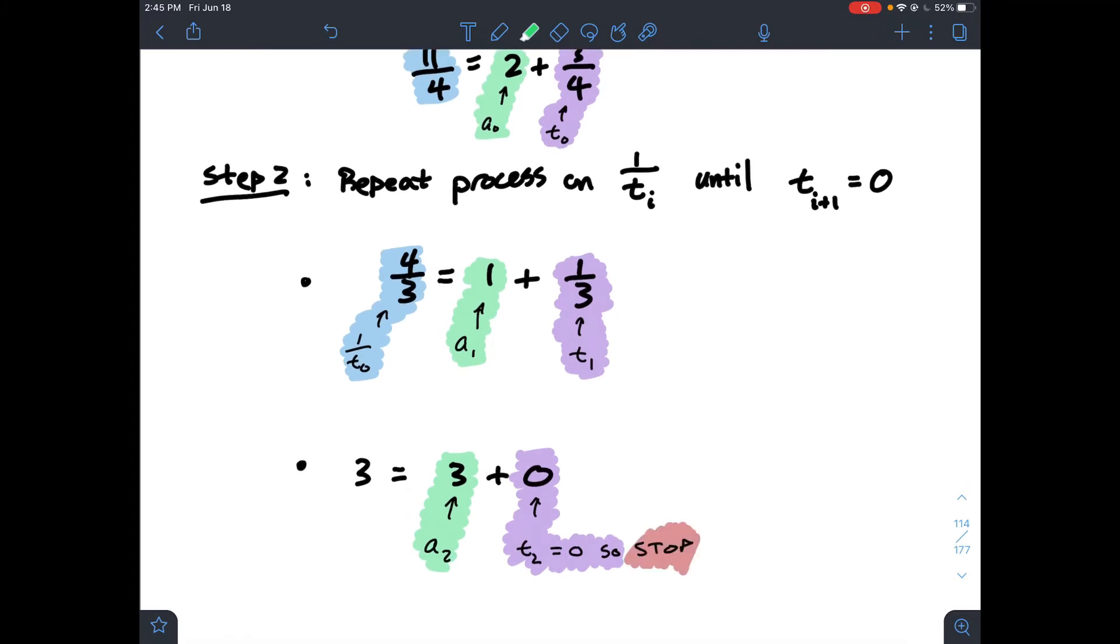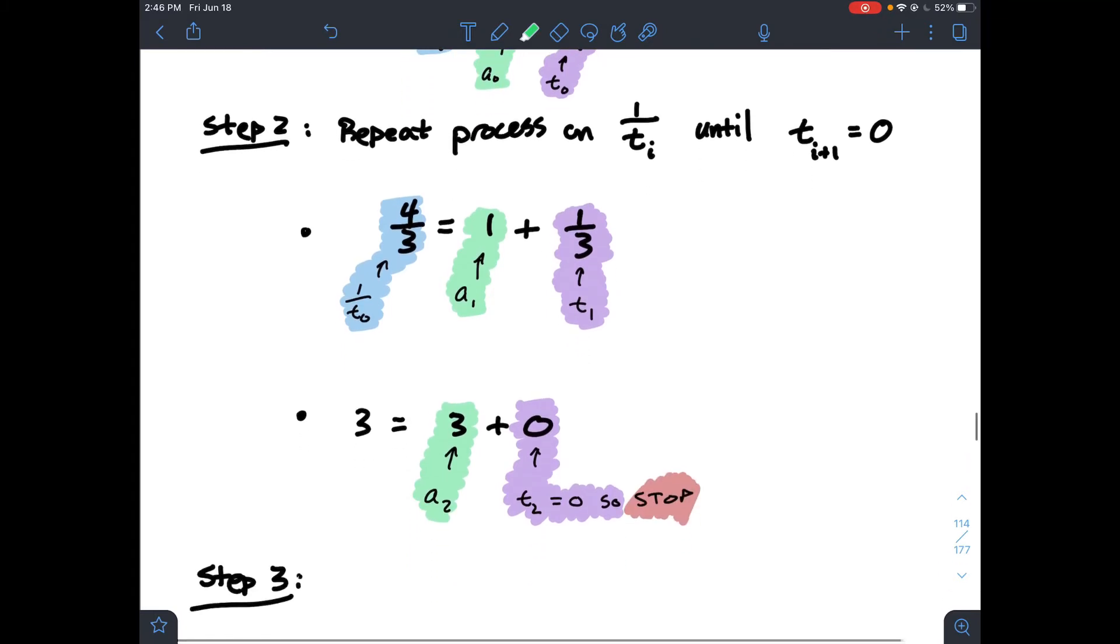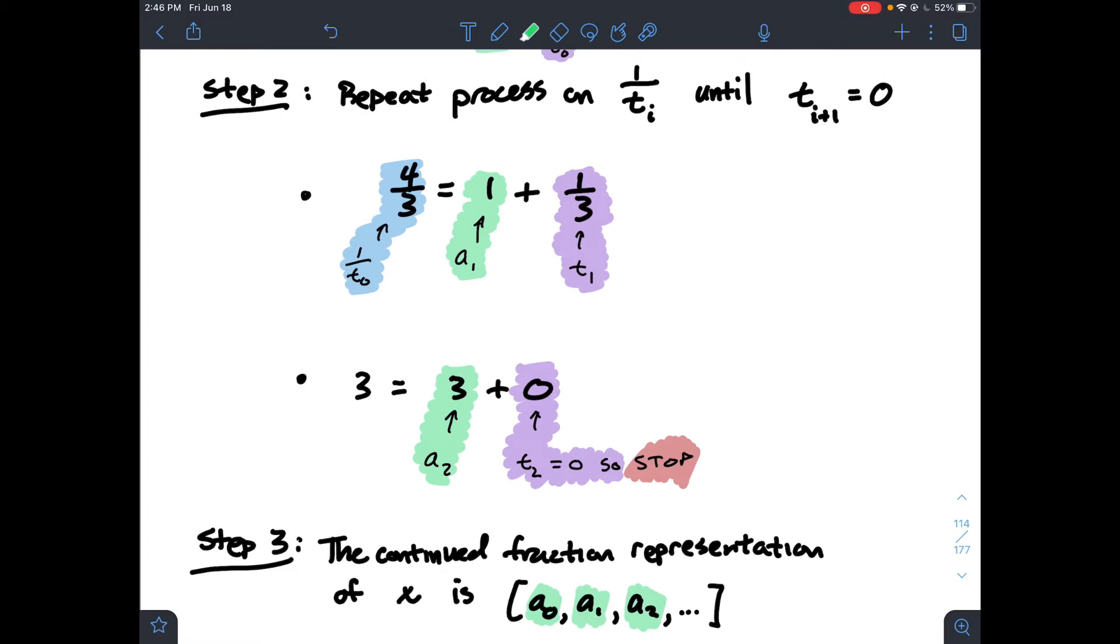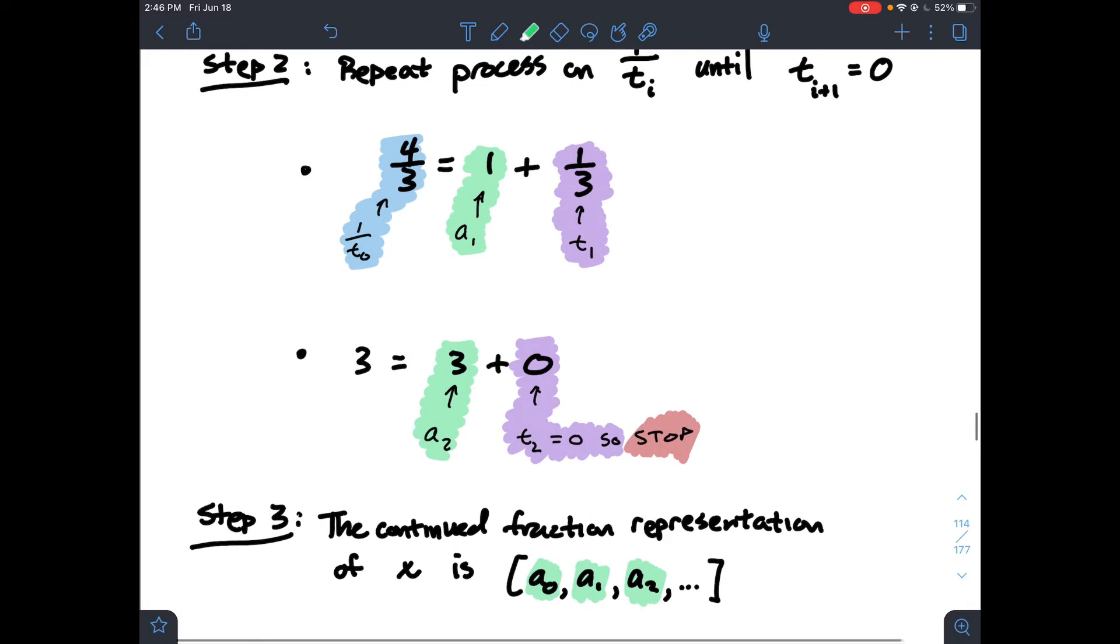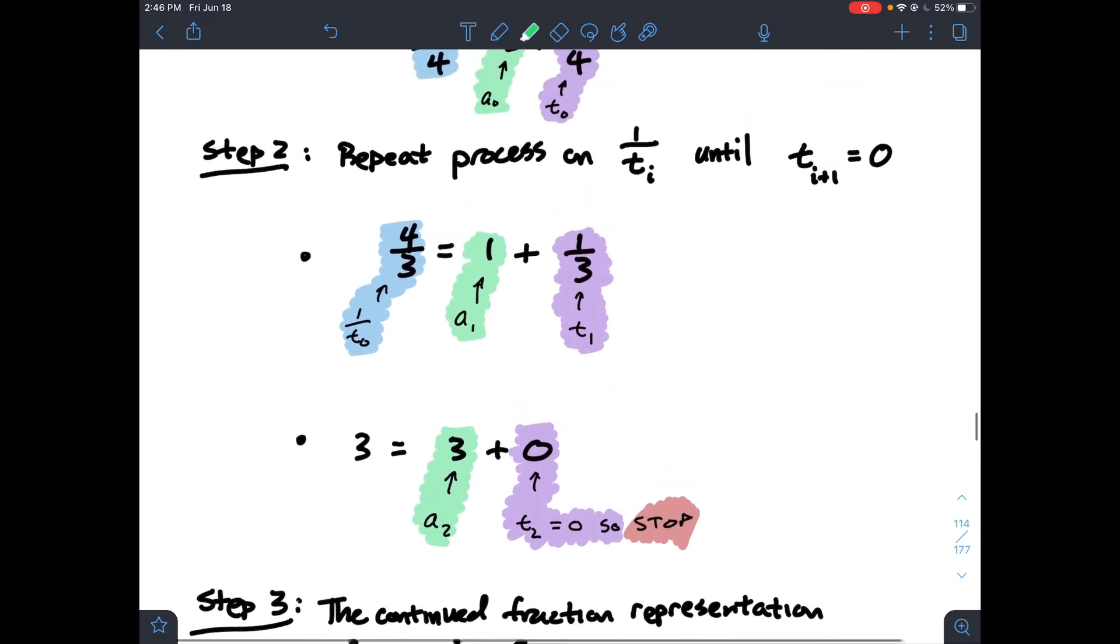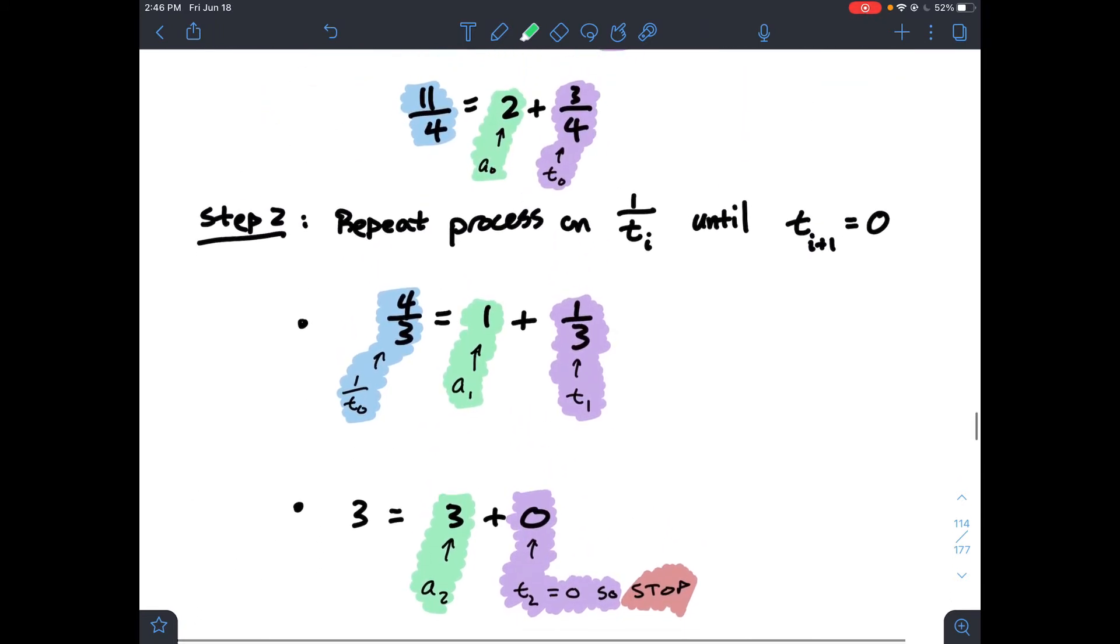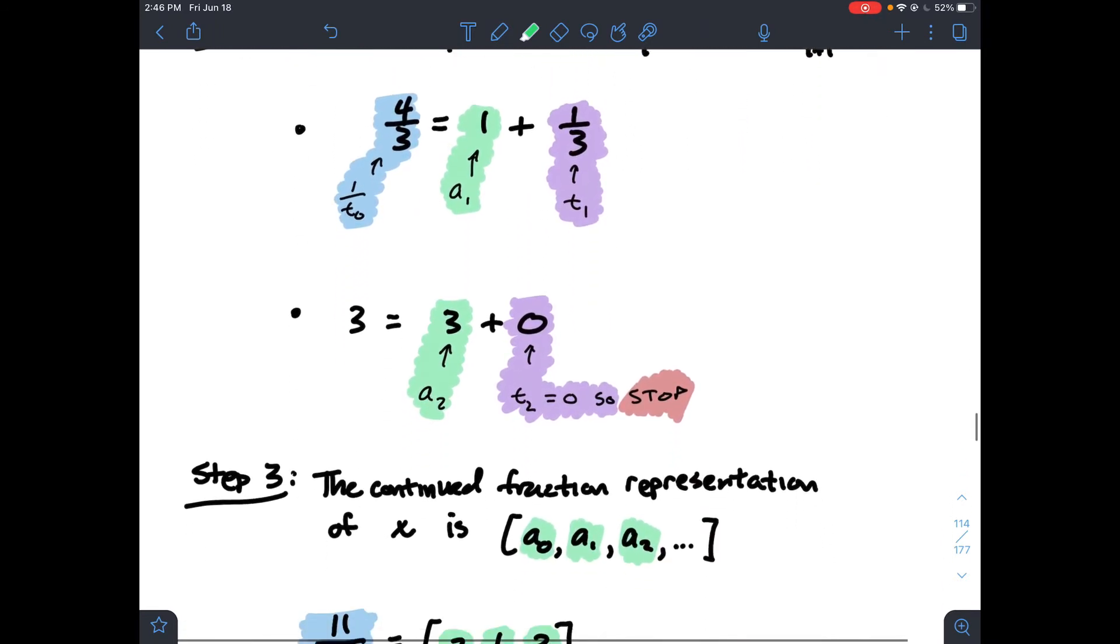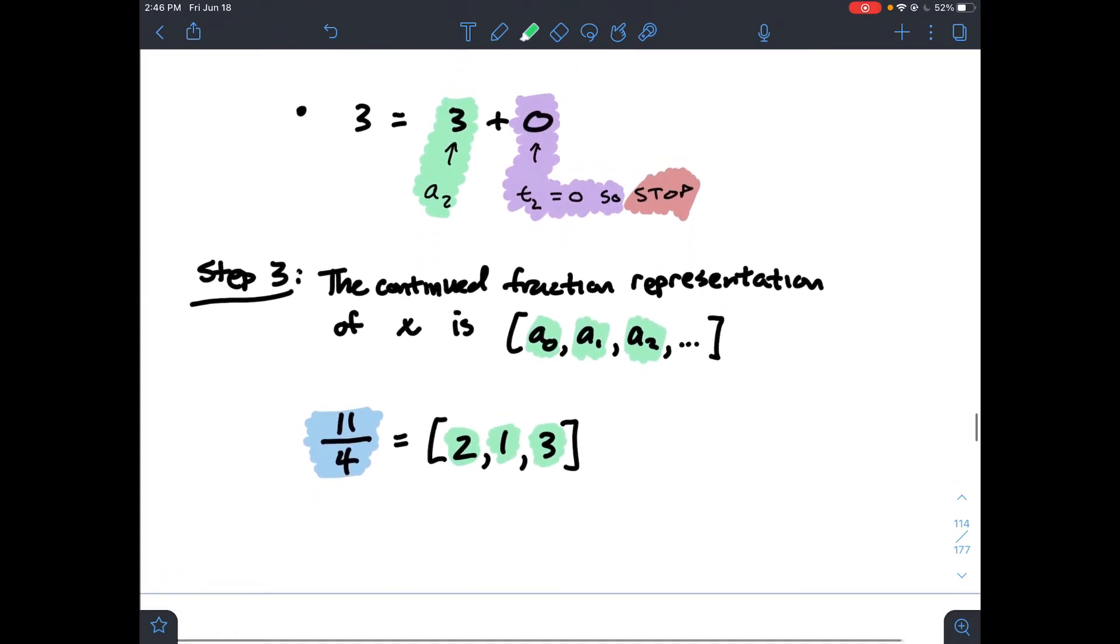We stop right here. And step 3 is the continued fraction representation. It's just what are the integers that you obtained when you're taking the floor of each 1 over ti. So a0, a1, a2, etc. What do we get as our answer? If I collect all the green ones, that's 2, 1, and 3. So the continued fraction representation of 11 fourths is 2, 1, and 3.